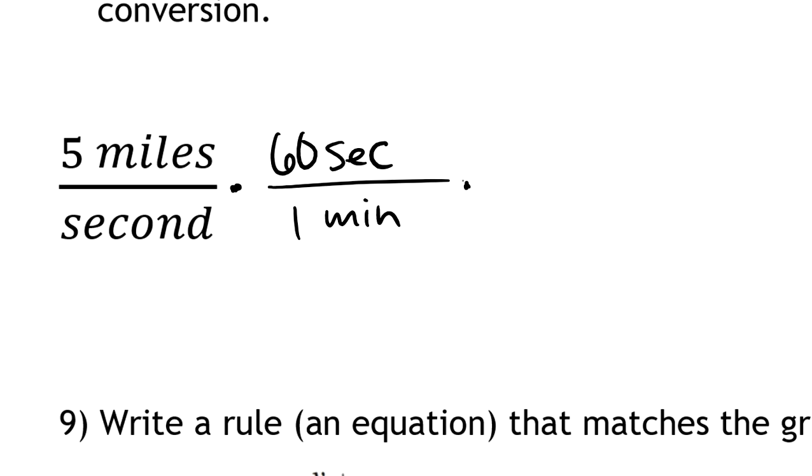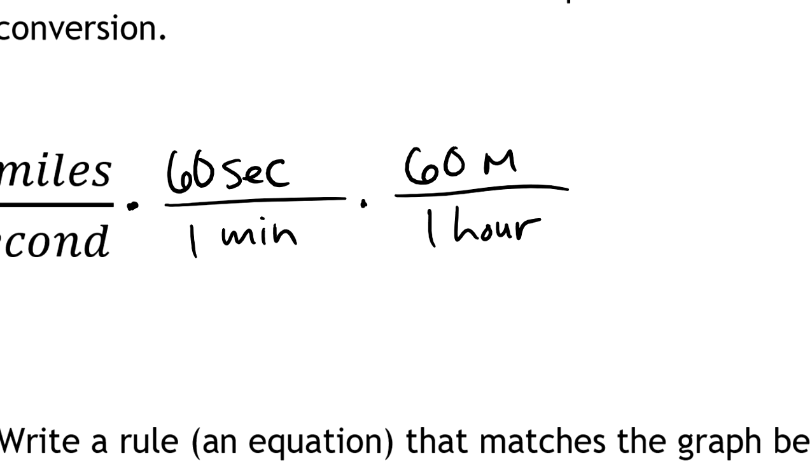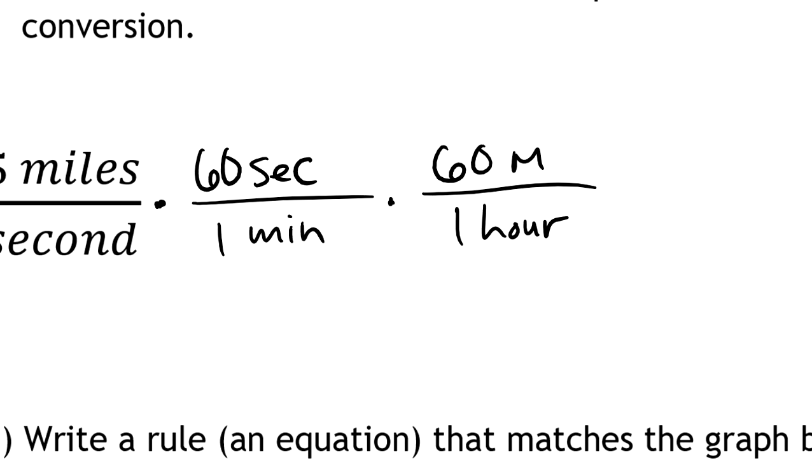Then I'm going to use the fact that 60 minutes is 1 hour. I think that's all I need, just those two conversion factors. So 5 miles per second times 60 seconds per minute times 60 minutes per hour.